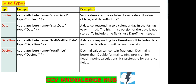The next one is Decimal. Decimal values can contain fractional portions. Decimal is better than Double for maintaining precision for floating point calculations. The syntax is: aura:attribute name equal to 'totalPrice', type equal to Decimal.